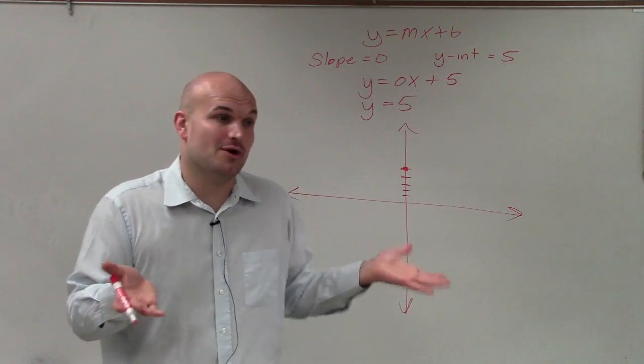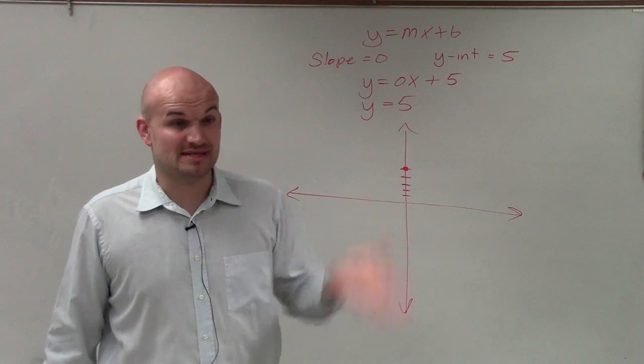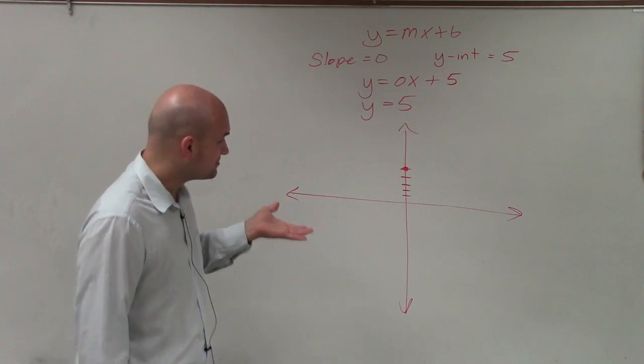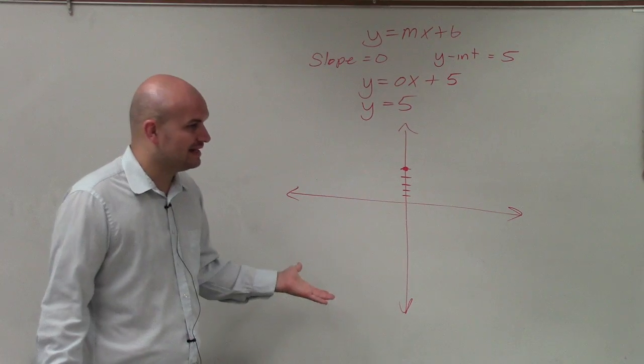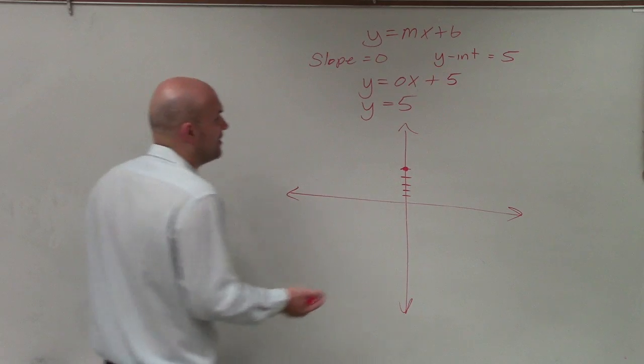Now, the problem is the slope is 0. The change in y is 0, so I'm not going to be going up or down. The change left and right can't be 0, because then we'd have something that would be undefined.